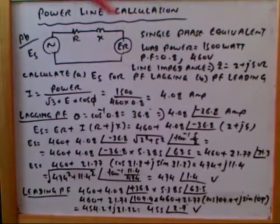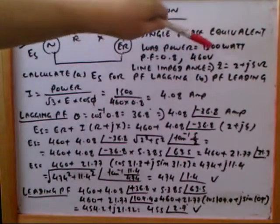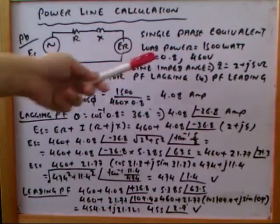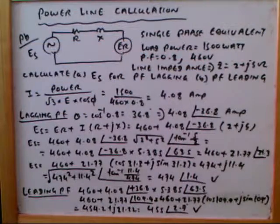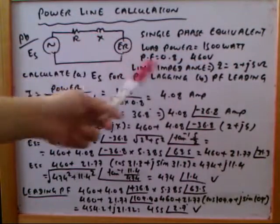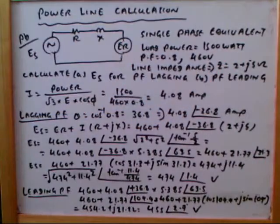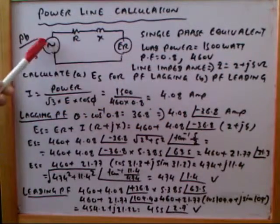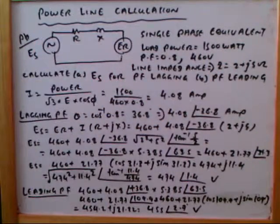This is single phase equivalent. The load power is 1500 watt. The load voltage is 460 volt. Line impedance R + jX is 2 + j5 ohm. We have to calculate Es for power factor lagging and also leading.